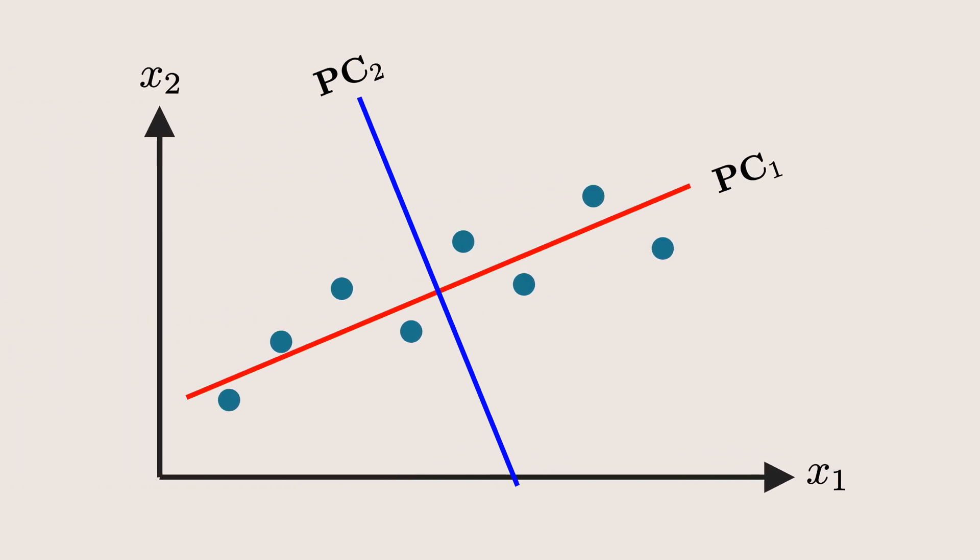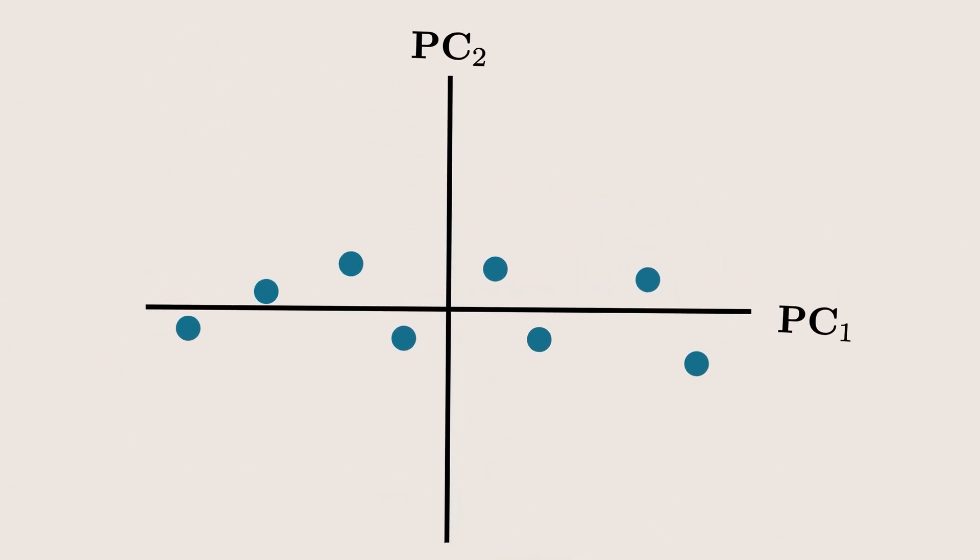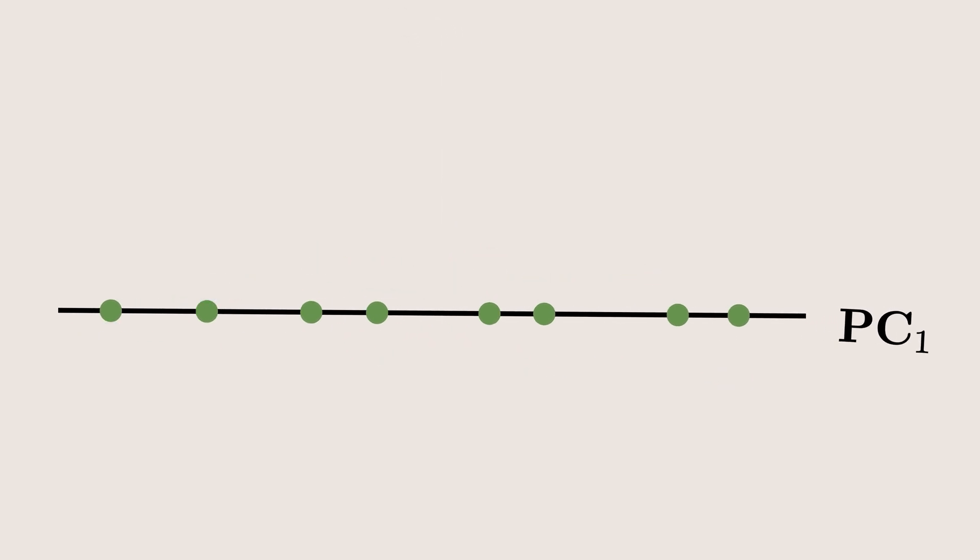When we project the data points onto these new axis, you will notice that the spread is much larger along PC1 than PC2. This tells us that PC1 carries most of the important information about the dataset. So in this example, we can keep only PC1 and drop PC2, effectively reducing the data from two dimensions to one, while preserving most of the information.